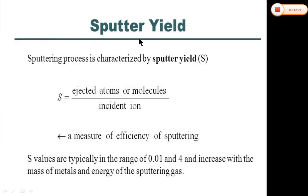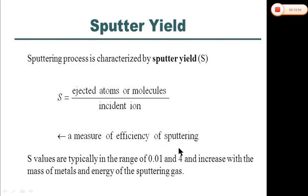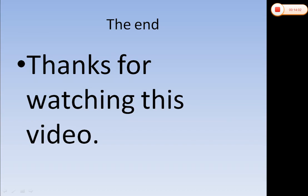What do we mean by sputter yield? The sputter yield is the production we gain after the sputtering process. Sputter yield S equals the number of ejected atoms or molecules from the surface of a target material divided by the number of incident ions (argon ions). S values are typically in the range of 0.01 to 4 (in some references up to 5) and increase with the mass of metals and the energy of the sputtering gas. Thank you so much for watching this video.